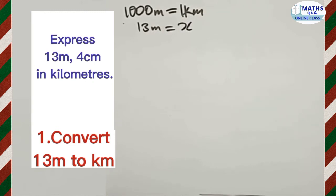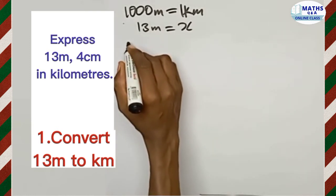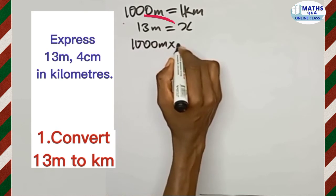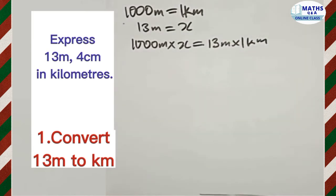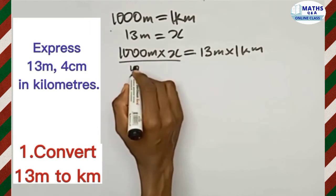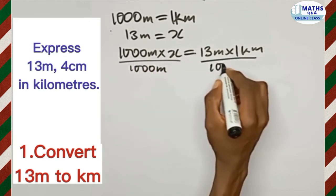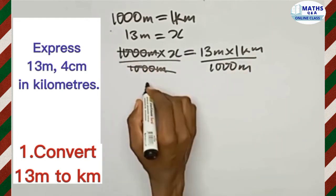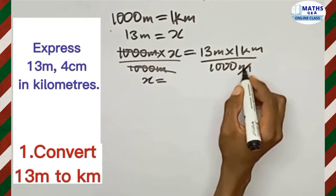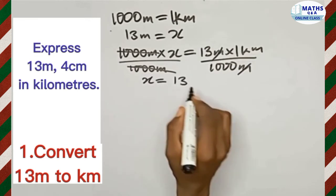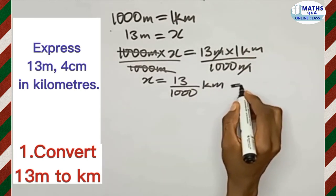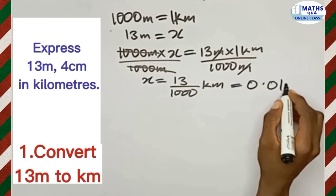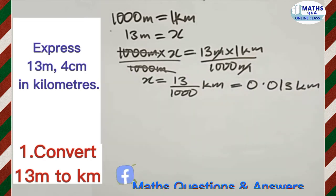We cross-multiply and make X the subject. We have a thousand meters multiplied by X equal to 13 meters multiplied by 1 kilometer. Since we're making X the subject, we divide both sides by a thousand meters, then we cancel out. So X is equal to 13 divided by a thousand, and it is now in kilometers.